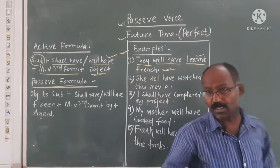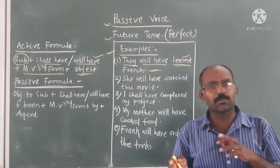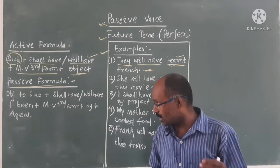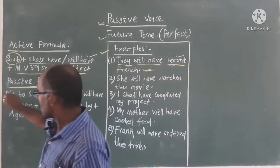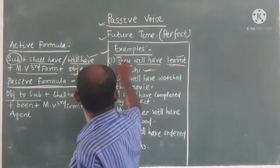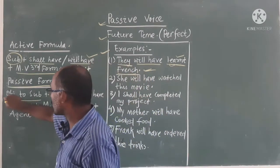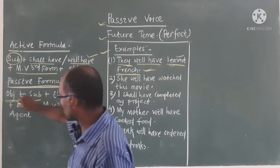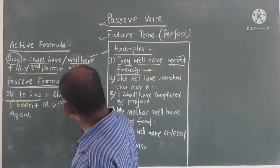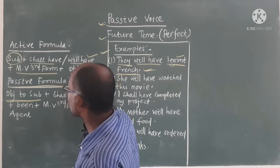Today our discussion is about passive — how we will change a sentence into passive. You have already read the passive formula in present and past tenses; future is ongoing now. The passive formula is: object comes to subject position. For example, 'friends' is the object, so friends will come first, taking the place of subject.